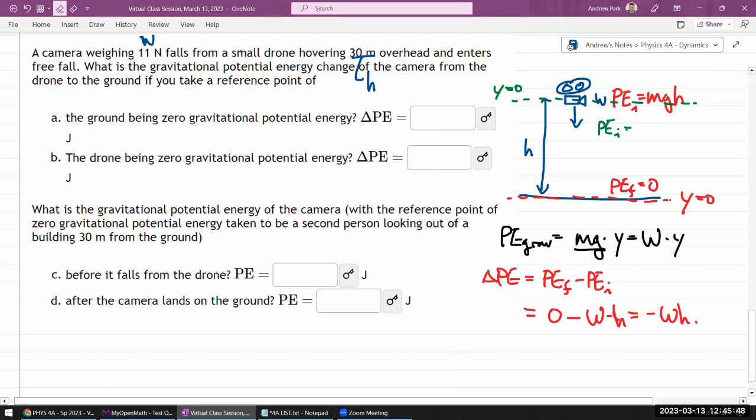So with this definition, your y coordinate here is zero, so your potential energy there would be zero. When it has fallen to the ground, you do have to be careful. You are downward, so your y values will be negative. It'll be at minus h. So your final gravitational potential energy will be weight times minus h.